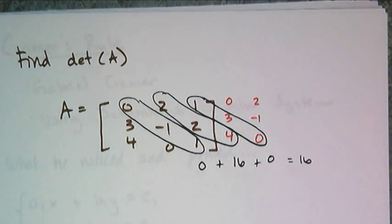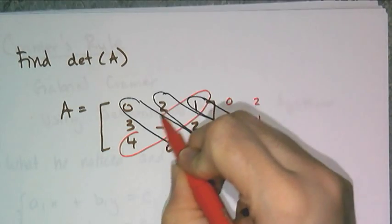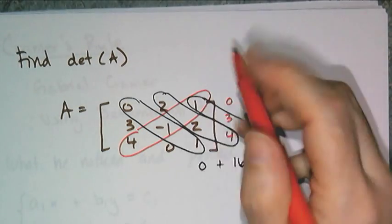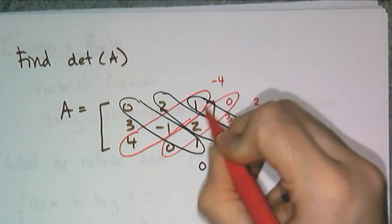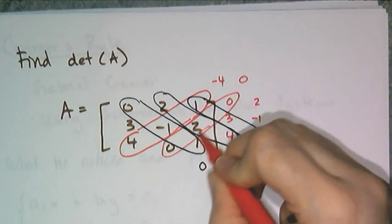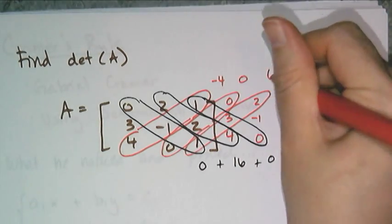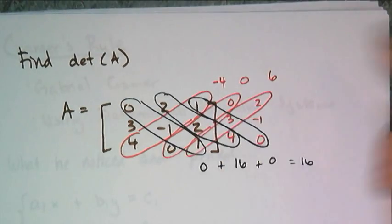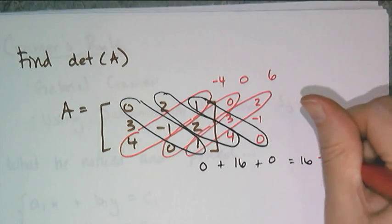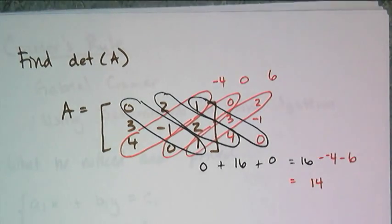And then I have to look at the upward diagonals. So this diagonal is 4 times negative 1 times 1, which is negative 4. 0 times 2 times 0, which is 0. And then 1 times 3 times 2, which is 6. Now what I'm supposed to do, I'm supposed to subtract off these values. So minus negative 4 minus 0 minus 6 gives me 14.